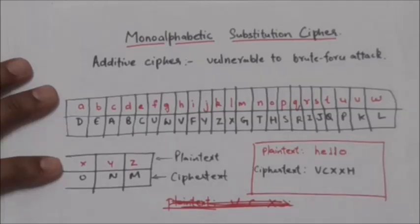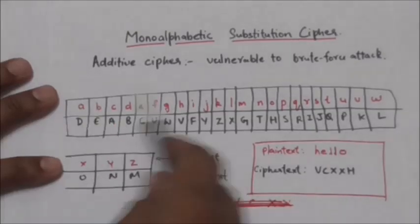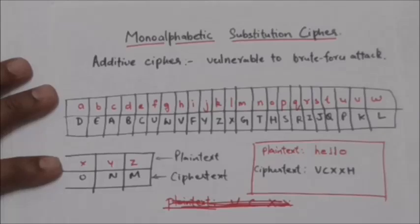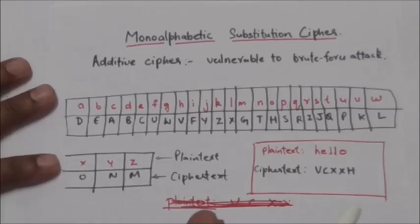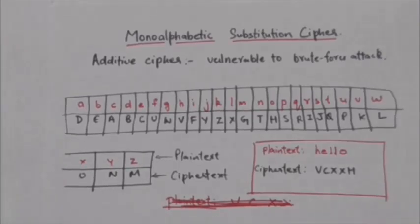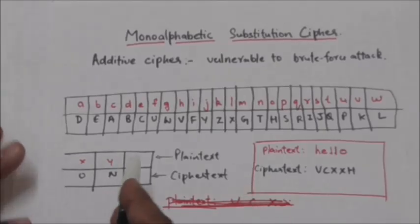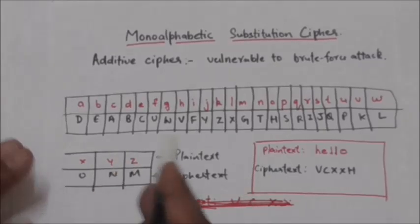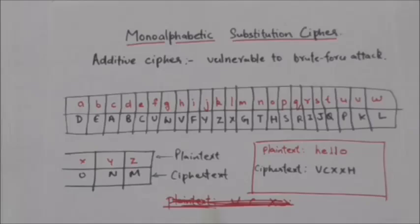The size of the key space for monoalphabetic substitution cipher is 26 factorial, which makes brute force attack extremely difficult. However, an attacker can still use a statistical attack based on the frequency of characters.